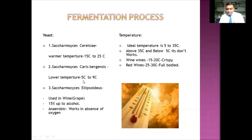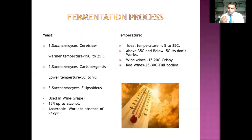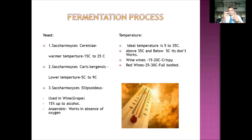Saccharomyces carlsbergensis works at low temperatures — around 5 to 9 degrees — and if you add this yeast you get very light beers. Saccharomyces ellipsoideus is a special yeast used especially for grapes and wine-making. These are the characteristics of the different types of yeast used in fermentation.